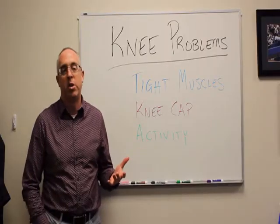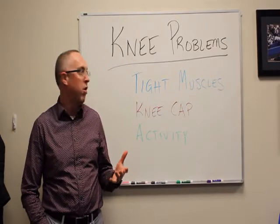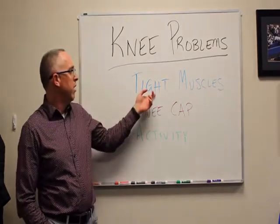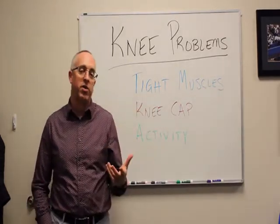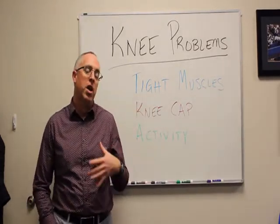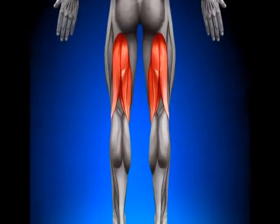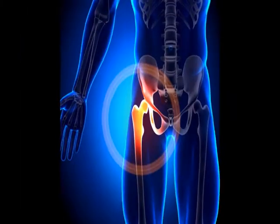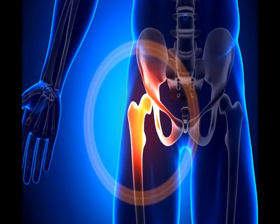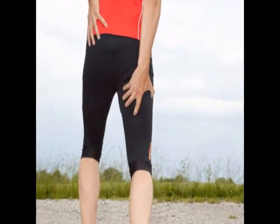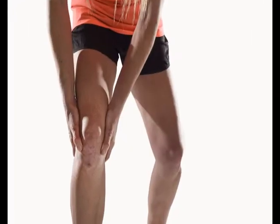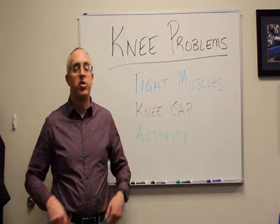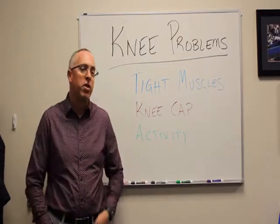Let's say knee problems start because you just started a walking program. That can really be brought on because you've got tight muscles in your legs — tight muscles in the back of your legs like your hamstrings, in the front of your hip like your hip flexors, in the back of your hip, in your glutes, your piriformis, and muscles called your obturators.